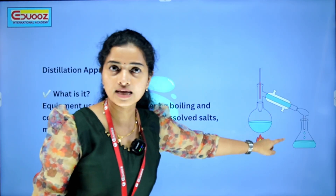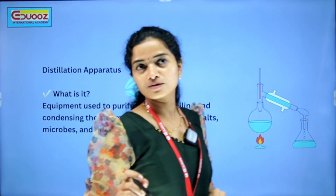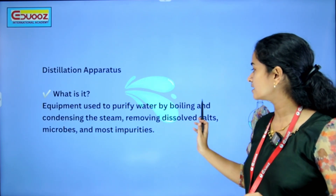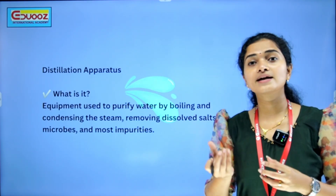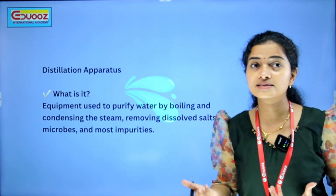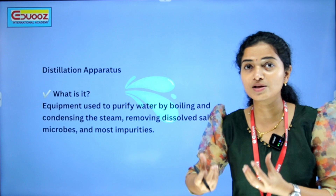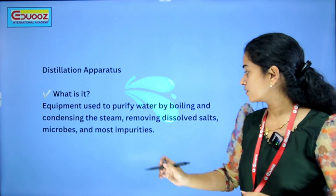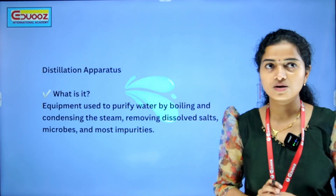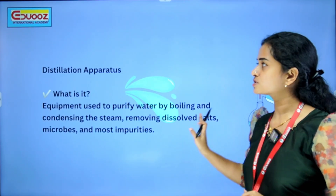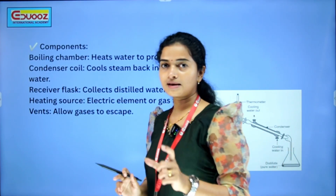You can see the distillation apparatus. The distillation apparatus is equipment used to purify water by boiling and condensing the steam. Boiling — then condensation — the vapors condense from steam and cool. It removes dissolved salts, microbes, and most of the impurities. That is distillation. It is important for distillation in our lab.